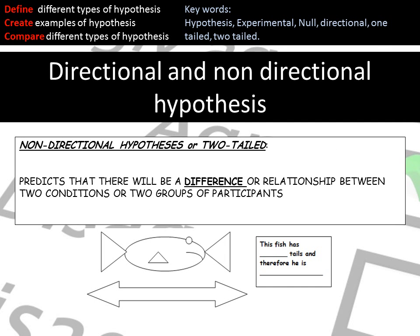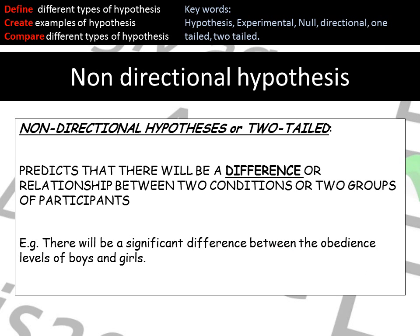A non-directional, or two-tailed, hypothesis predicts that there will be a difference but doesn't say what direction. For example, 'there will be a difference in obedience levels between boys and girls' — it doesn't say who will be more obedient, just that a difference exists.